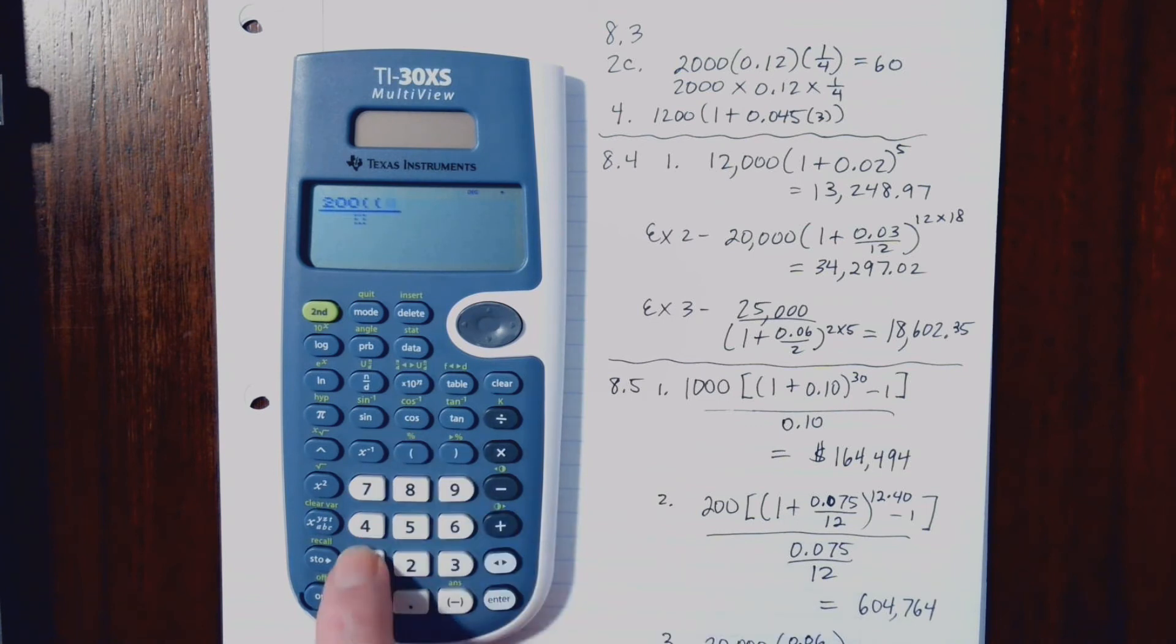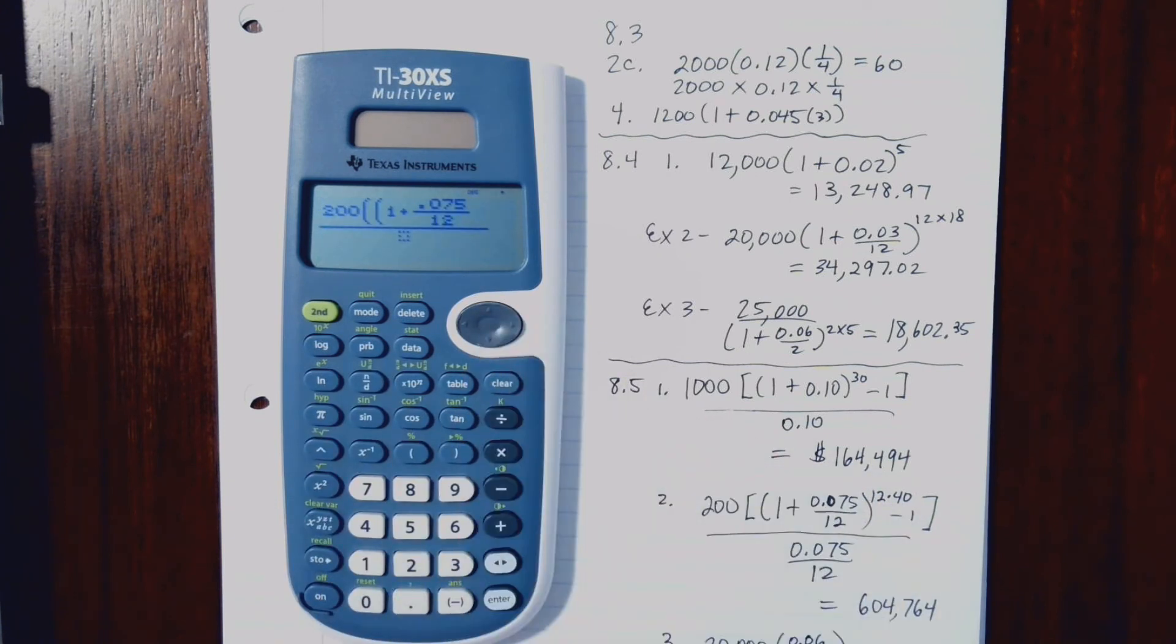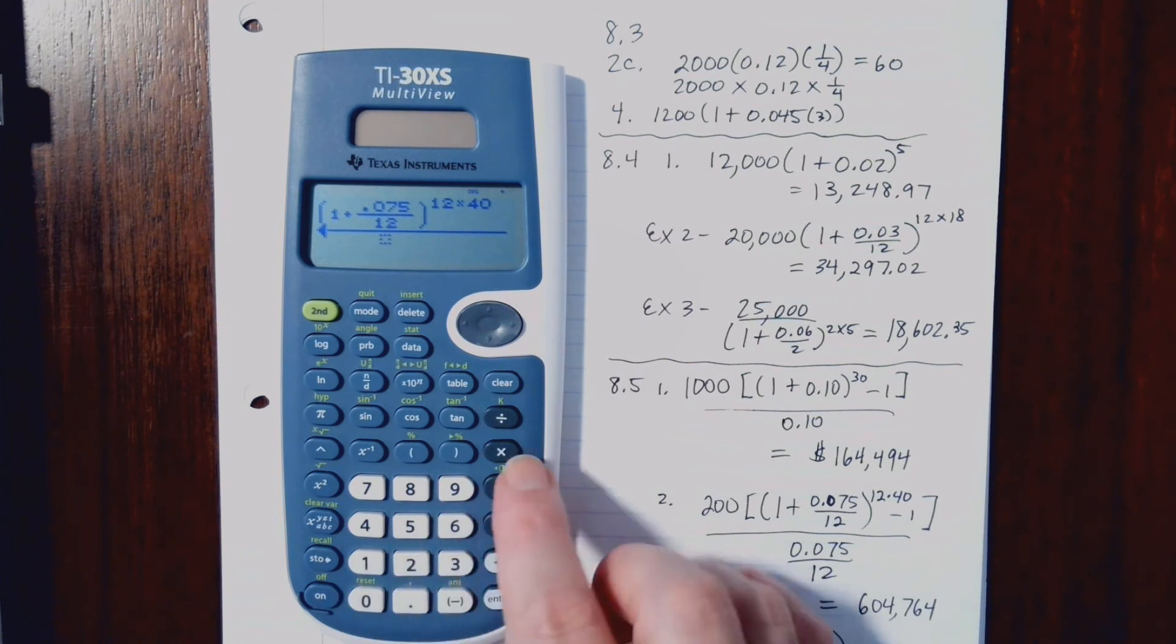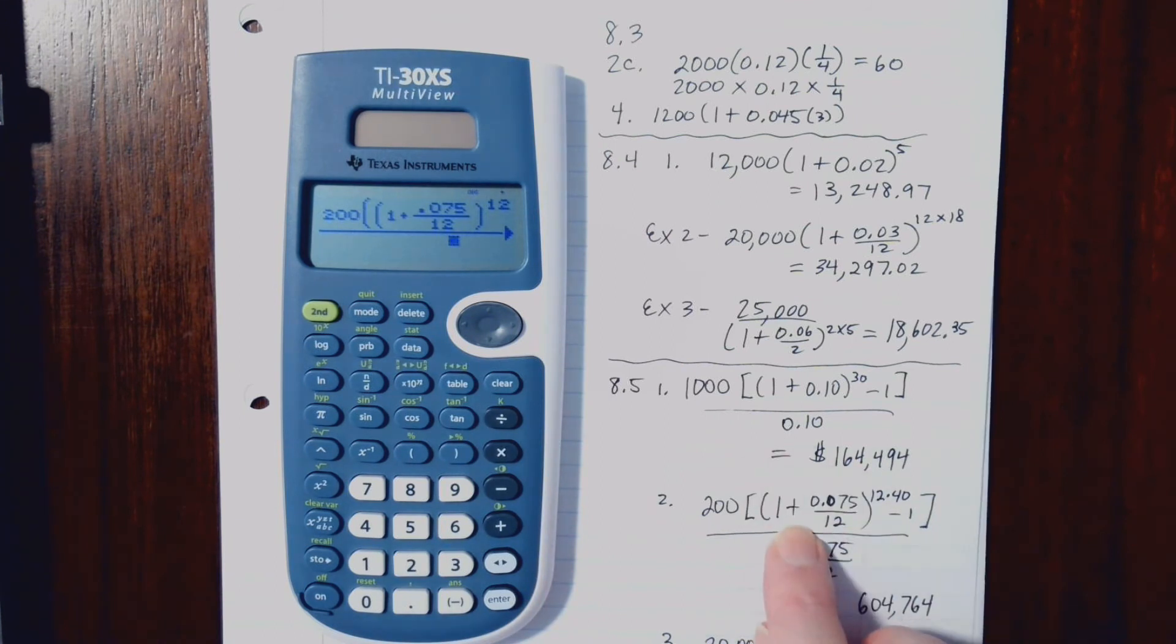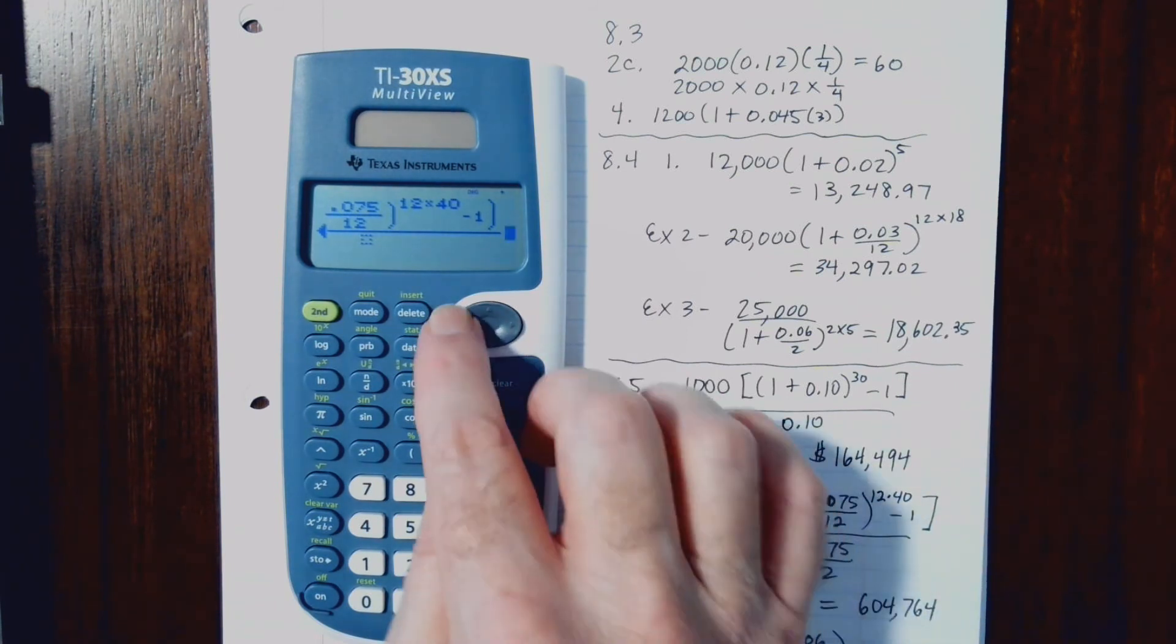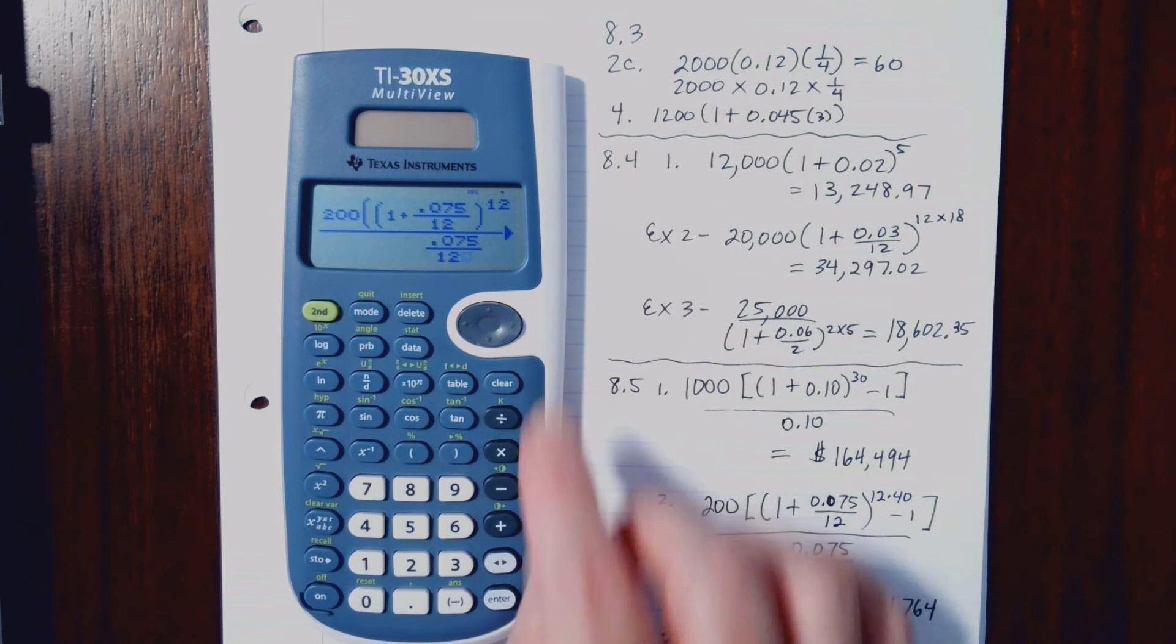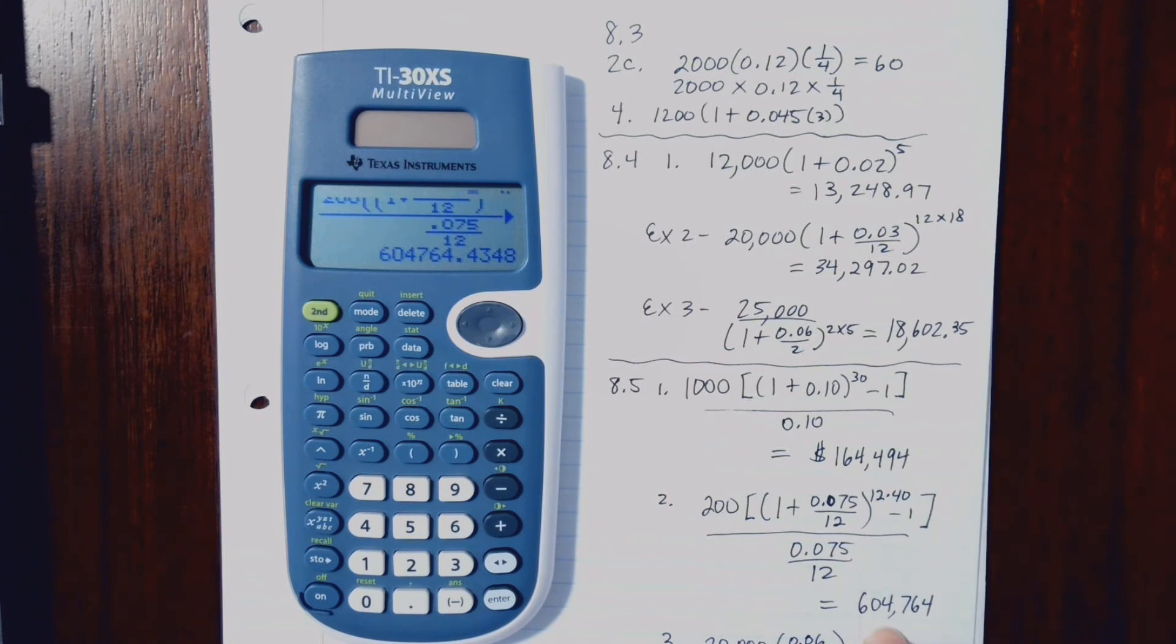Let's see. So it's 200, parenthesis, parenthesis, 1 plus .075, fraction 12, 12, and parenthesis, exponent, 12 times 40, minus 1, end of parenthesis. There we go. So when I arrow down, you can see the whole numerator, which is really nice. Just, actually, you can't see the whole thing. You have to arrow over. There we go. But anyway, you can see that things are looking good so far. Let's go ahead and put in our denominator. It's going to be .075, and then hit the fraction button, and then the 12. And now, we can finally go ahead and hit enter, and you get 604,764.